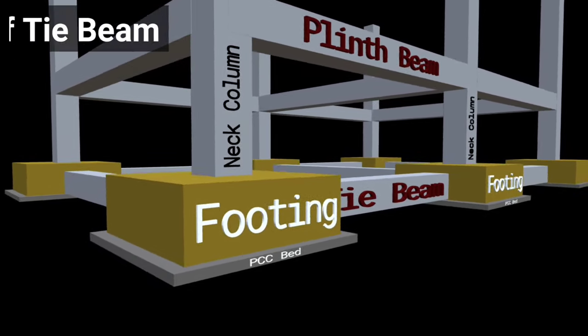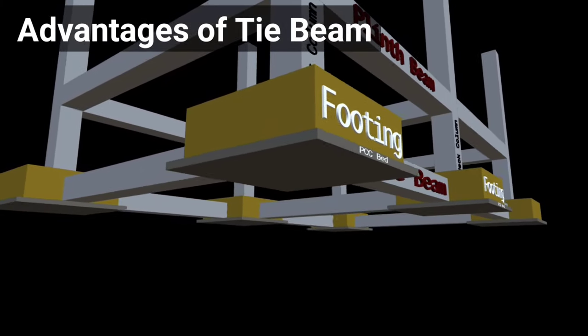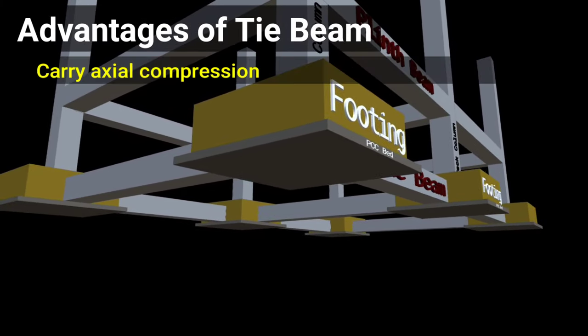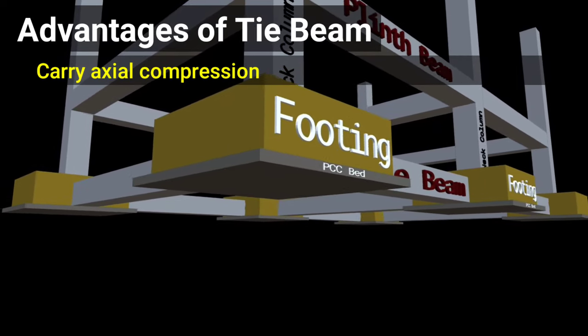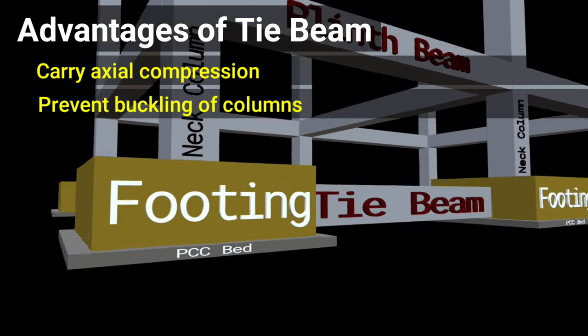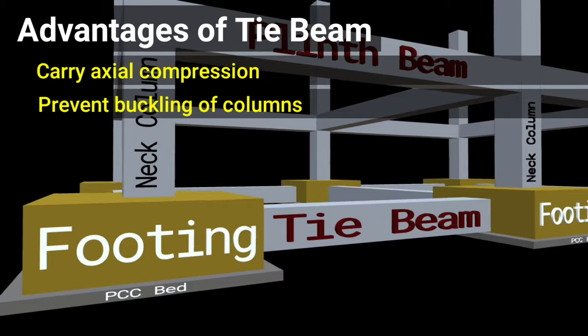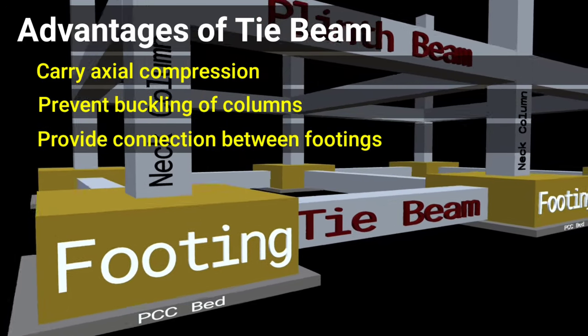The various advantages of providing tie beams can be summarized as: tie beams carry axial compression, these beams can prevent columns from buckling, and they provide connection between column footings.